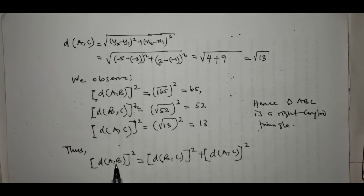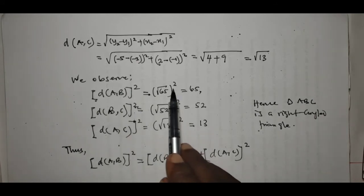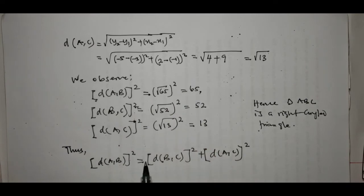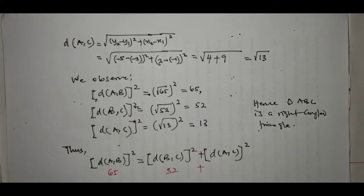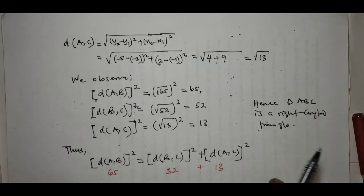We have seen that the square of the hypotenuse — which is AB, the largest side — is 65, and it equals the sum of the squares of the other two sides: BC squared is 52 and AC squared is 13, so 52 plus 13 is 65. This confirms that triangle ABC is a right-angled triangle.